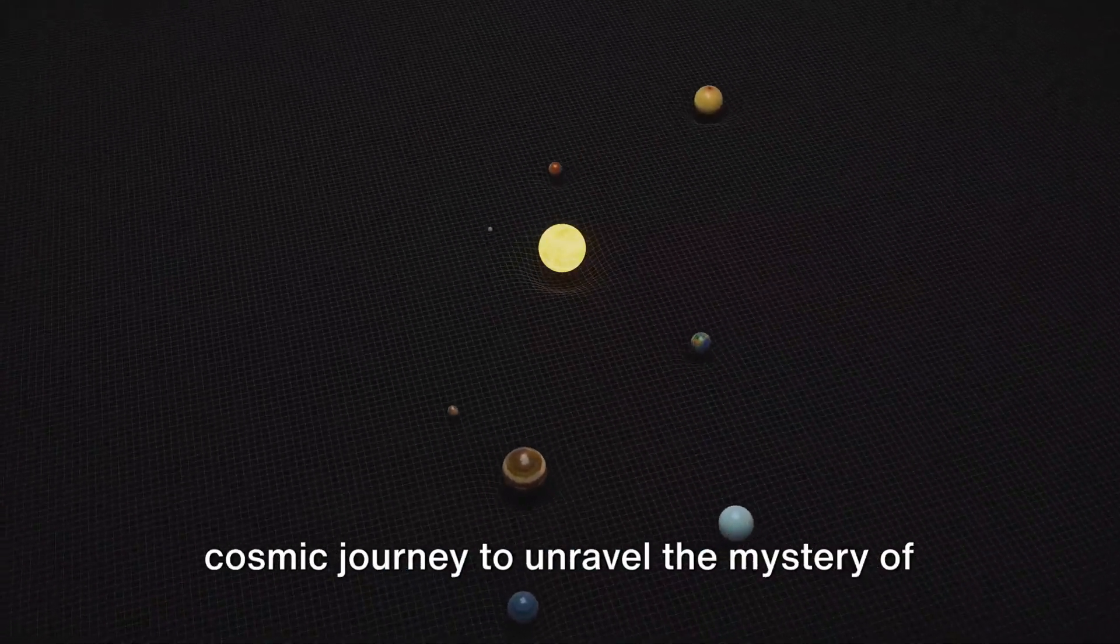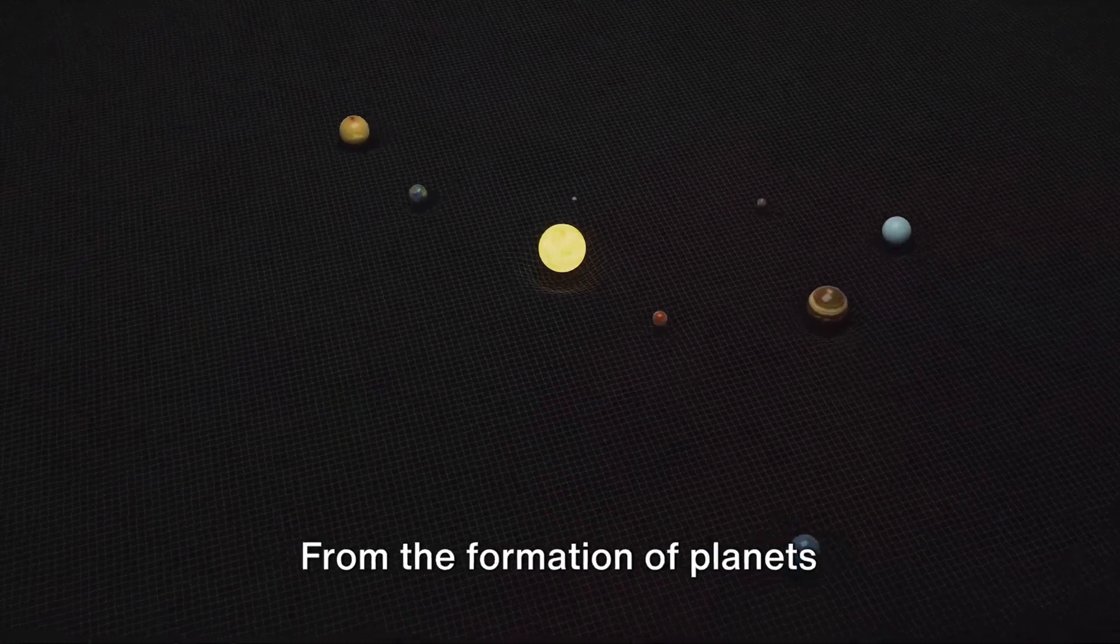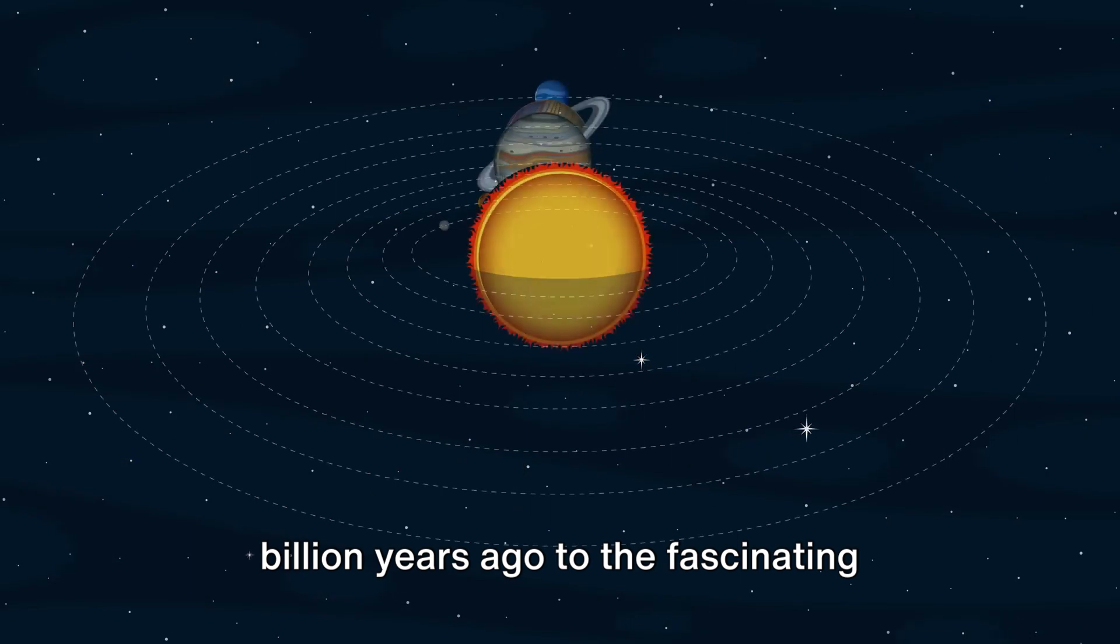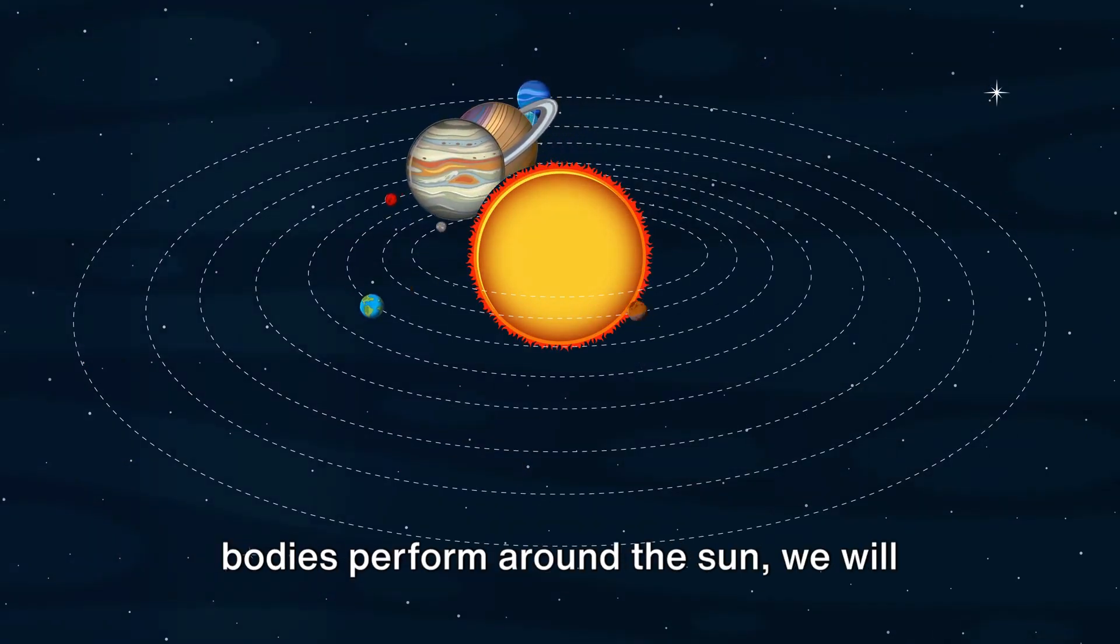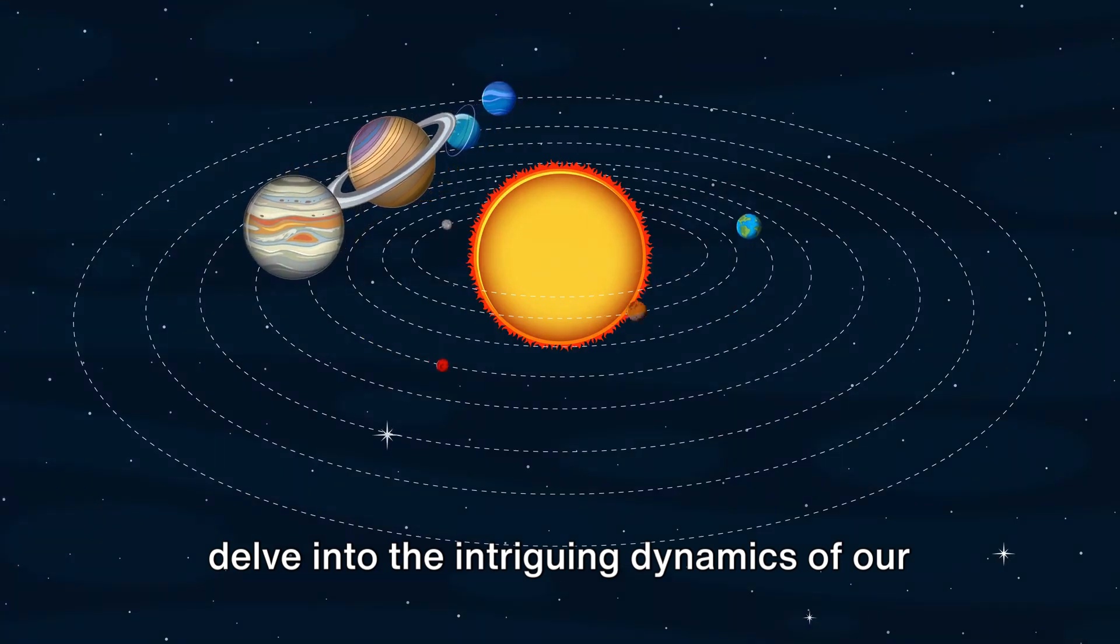In this video we're going to take a cosmic journey to unravel the mystery of how our solar system came into being. From the formation of planets approximately 4.6 billion years ago to the fascinating dance of orbits that these celestial bodies perform around the sun, we will delve into the intriguing dynamics of our solar system.